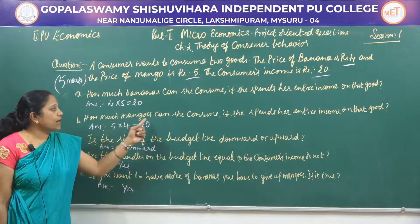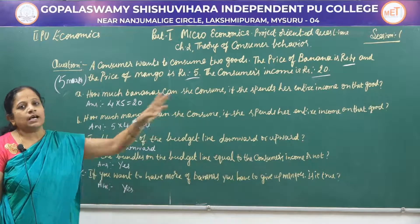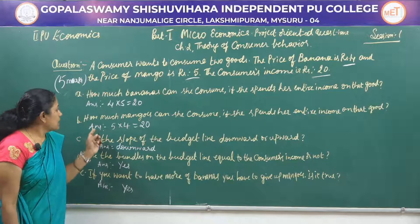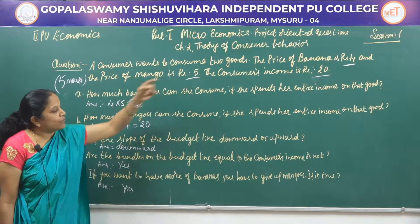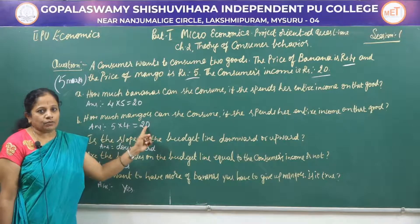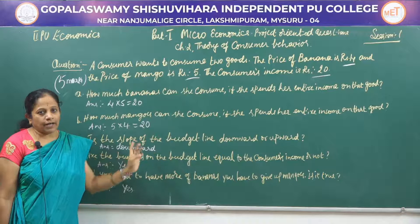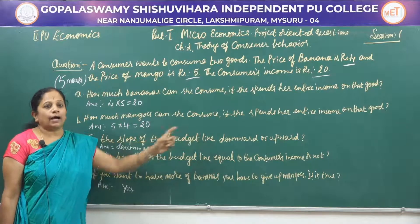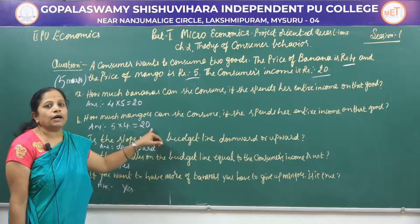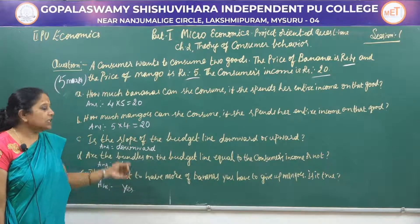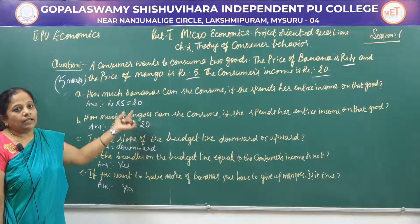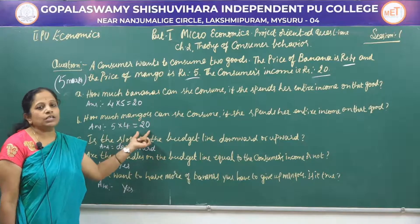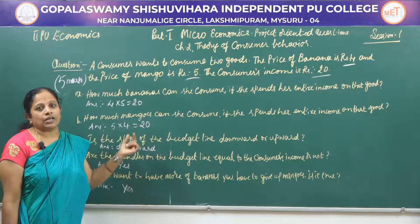The second question: how much mangoes can she consume if she spends her entire income on that good? The price of one mango is ₹5 and her income is ₹20. So 20 divided by 5 is 4. If she buys mangoes at ₹5 per mango, she can buy 4 mangoes. So with her entire income of ₹20, she is able to buy 4 mangoes. In the case of banana, she can buy 5 bananas; in the case of mango, she can buy 4 mangoes.